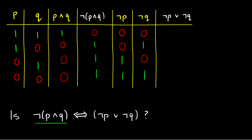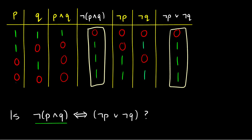Now that we have ¬P and ¬Q, we can do ¬P∨¬Q. It's going to be true when at least one of those is true. In the first row, ¬P is false and ¬Q is false, so ¬P∨¬Q is false. In the second row, ¬P is false but ¬Q is true, so ¬P∨¬Q is true. In row three, ¬P is true, so ¬P∨¬Q is true. In the fourth row, they're both true, so ¬P∨¬Q is true. The truth conditions for both formulas are exactly the same — therefore yes, they're logically equivalent. So if I ever have ¬(P∧Q) in a proof, I can substitute it with ¬P∨¬Q because they're exactly the same thing.